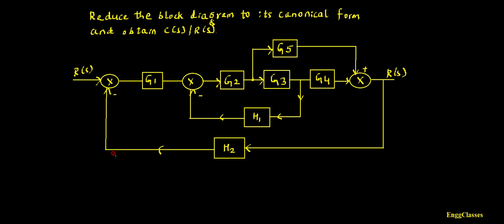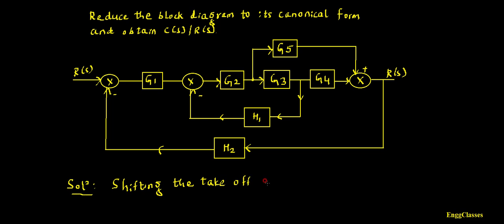Looking at this block diagram, the first step is that I cannot reduce it further until I move the takeoff point to the right of G3. If I do that, G2 and G3 will be in series and later they make a minor feedback loop with H1, and G4 will be in parallel. So I have to shift the takeoff point after G3.